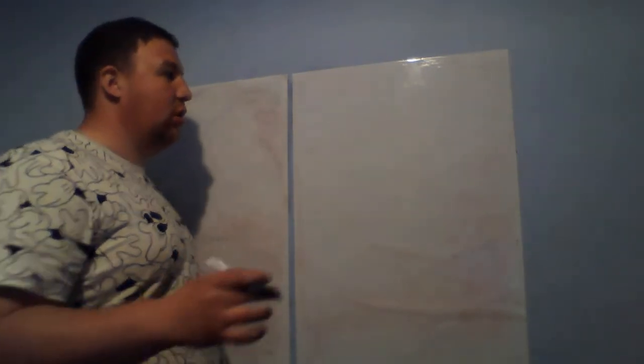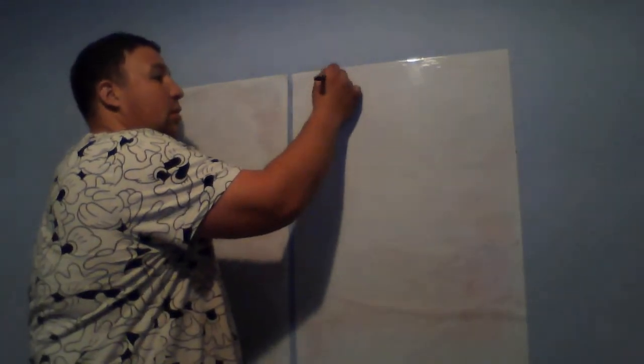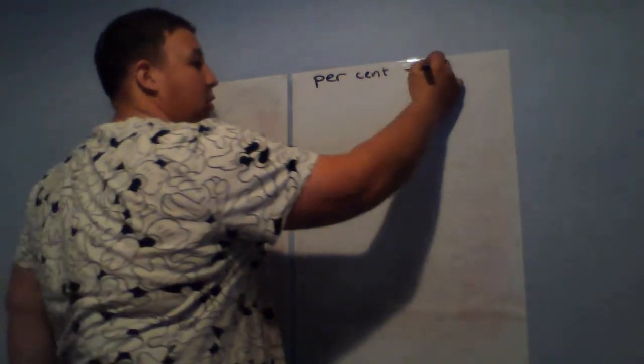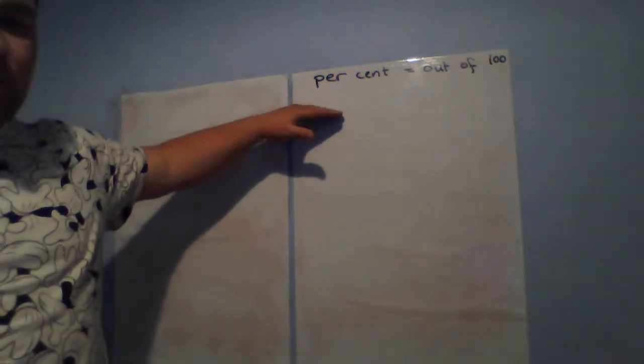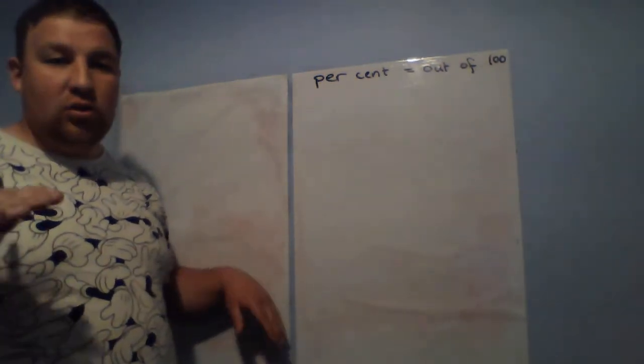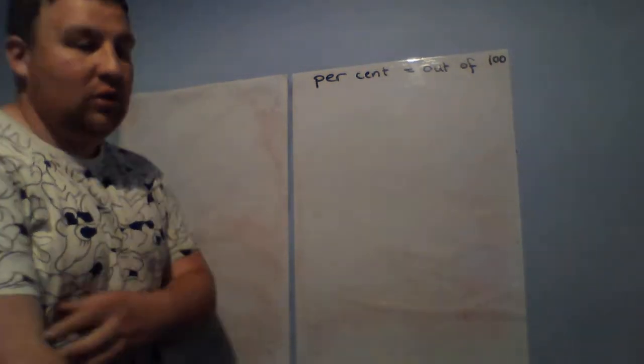For percentages, it's always important that if you're working with fractions, you have to get it over a hundred. With decimals, we use the two numbers after the decimal point for our percentage. Percent equals out of 100 — every time we think of percent, we should be thinking of a hundred. As a fraction you have to have it over a hundred; as a decimal you're pretty much looking at the two numbers that are after the decimal point.